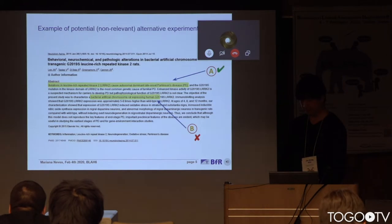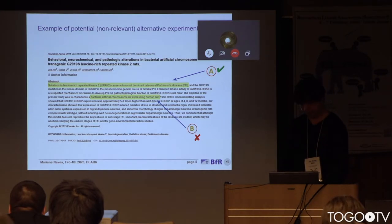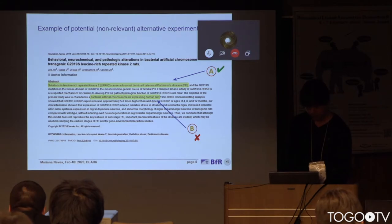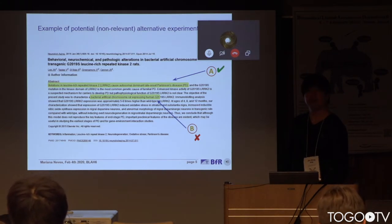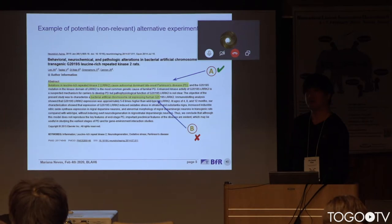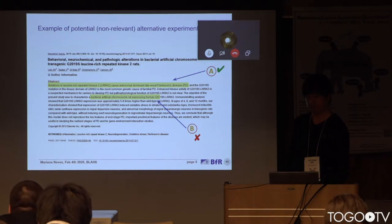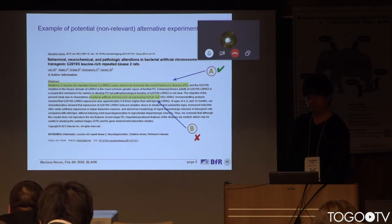Here I show a potential alternative method, since this publication also addresses the same research goal — that is, mutations on that particular gene as a cause for Parkinson's disease. However, the method described in this publication relies on rats, as indicated by aspect B, and thus it does not constitute a valid alternative method that should be returned by our system for that input document.